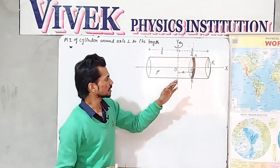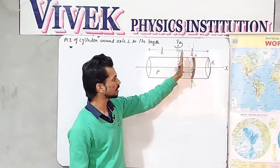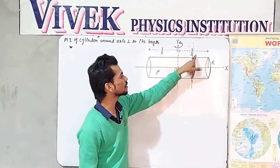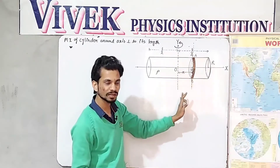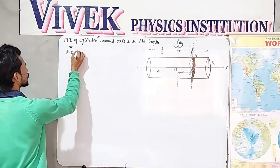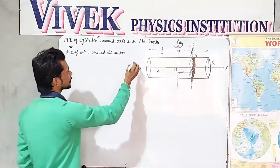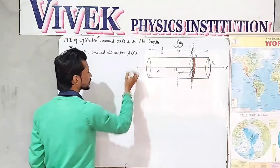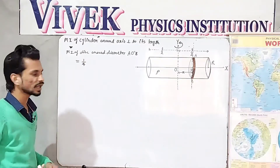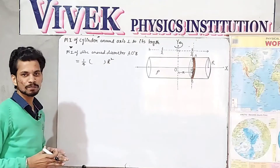First, let me find the moment of inertia of the disk around its diameter. The diameter of the disk is O-dash A or O-dash B. As shown in the last video, the moment of inertia of a disk around any diameter is given by (1/4) × mass × R², where R is the radius of the disk.